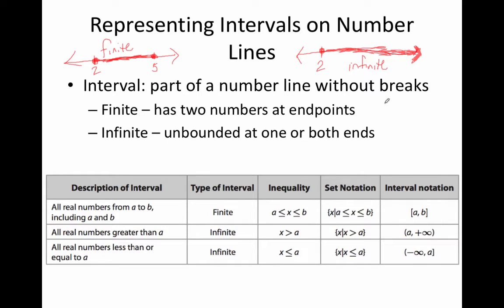Another example of an infinite interval: maybe I start at 3 but instead of going to the right, I go to the left of 3 — I want everything smaller than 3. Notice that this time I have an open circle at 3, so I'm not including that 3 in my interval. So these are just some visual number line examples of intervals. We'll see more of these as we do some practice problems shortly.